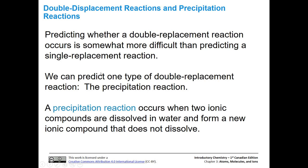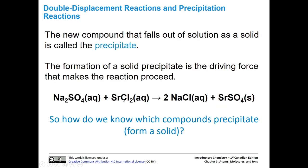Predicting whether a double displacement reaction occurs is more difficult than predicting a single replacement reaction. There is one type we can predict, called the precipitation reaction. This happens when two ionic compounds dissolved in water form a new ionic compound that does not dissolve in water. So you have two soluble ionic compounds that dissolve, and once you create two new products, usually just one forms an ionic compound that is insoluble. That new compound falls out of solution as a solid called a precipitate.